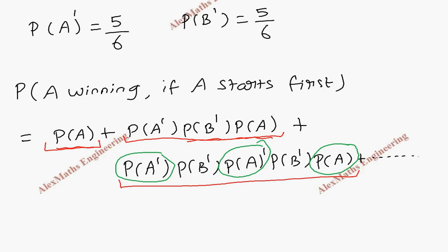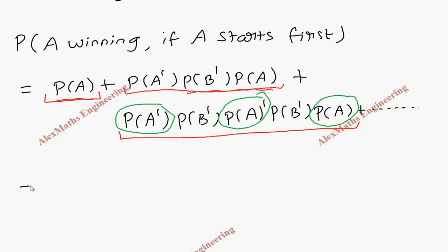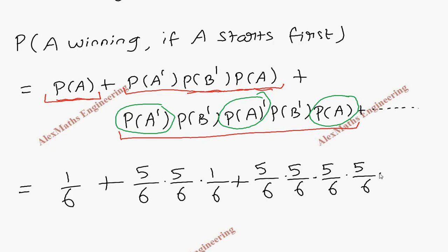I'm going to substitute the values. This is 1 by 6 plus 5 by 6 into 5 by 6 into 1 by 6 plus 5 by 6 into 5 by 6 into 5 by 6 into 1 by 6, 5 by 6 into 5 by 6, and like this it continues.